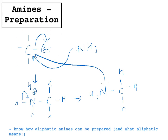To make sure you only get the primary amine, use an excess of ammonia. If you use excess ammonia, the haloalkane is more likely to collide with the ammonia than with the amine you've already made. You'll make a little bit of secondary amine, but not nearly as much as if you hadn't used excess ammonia.